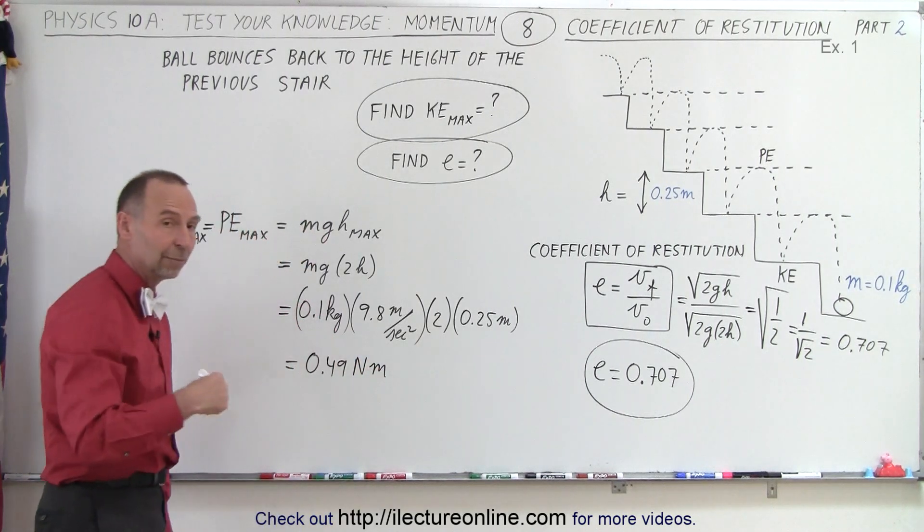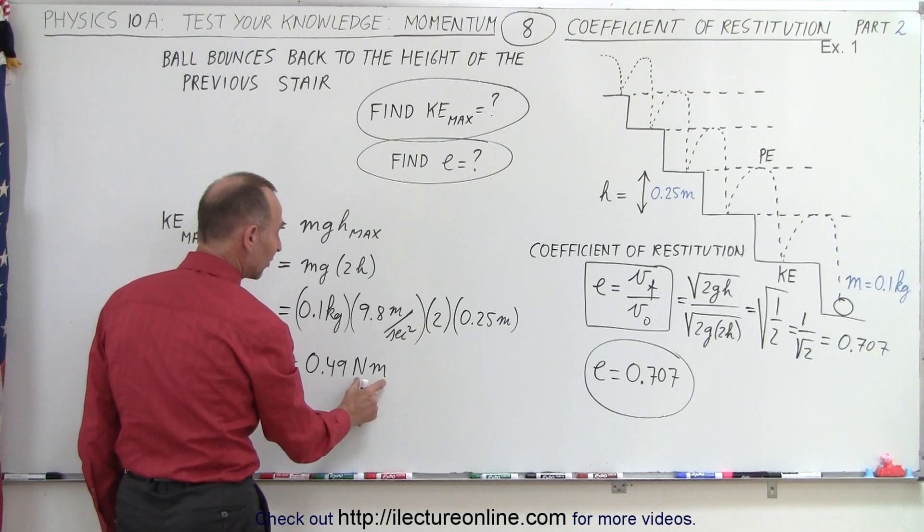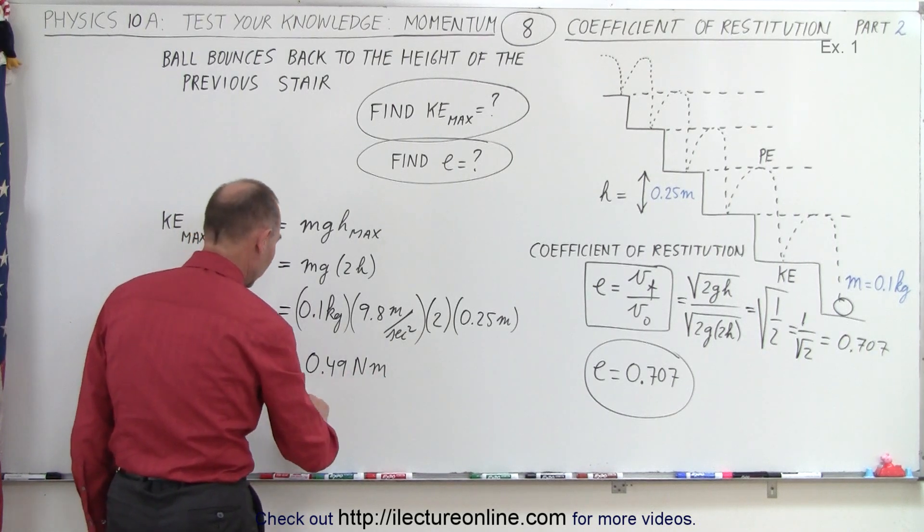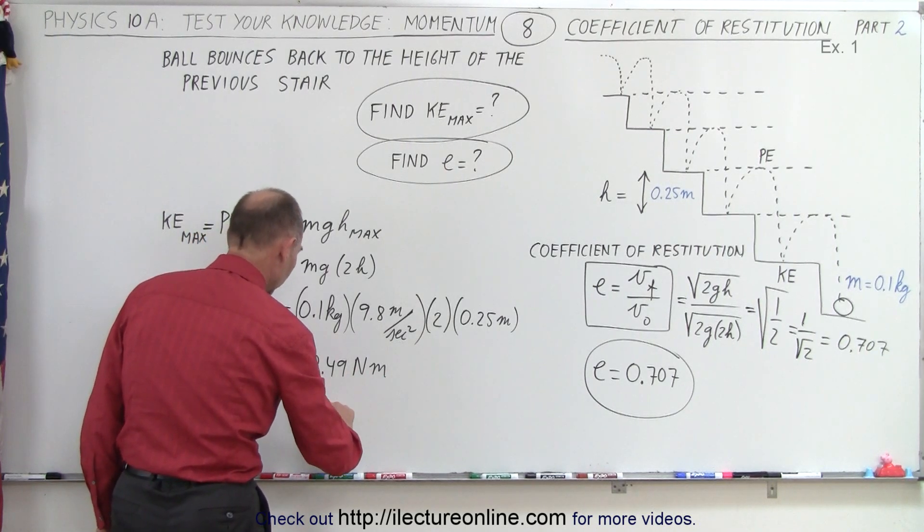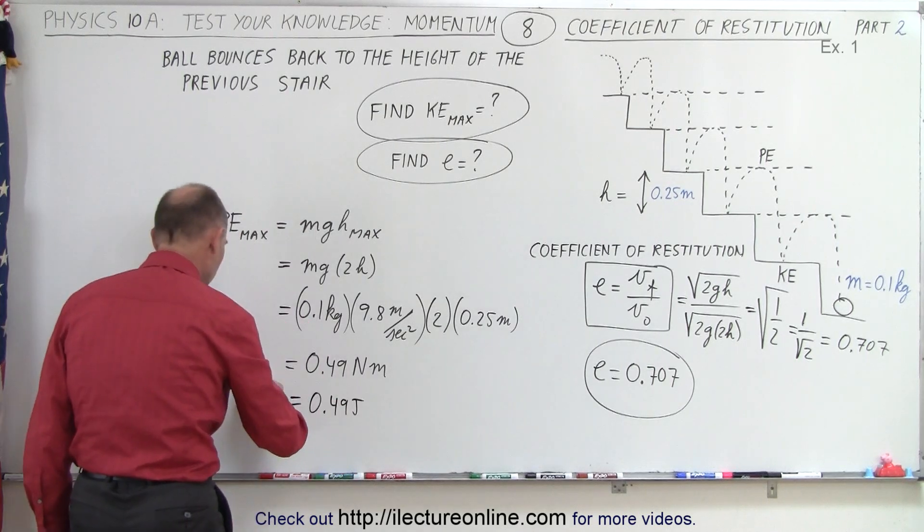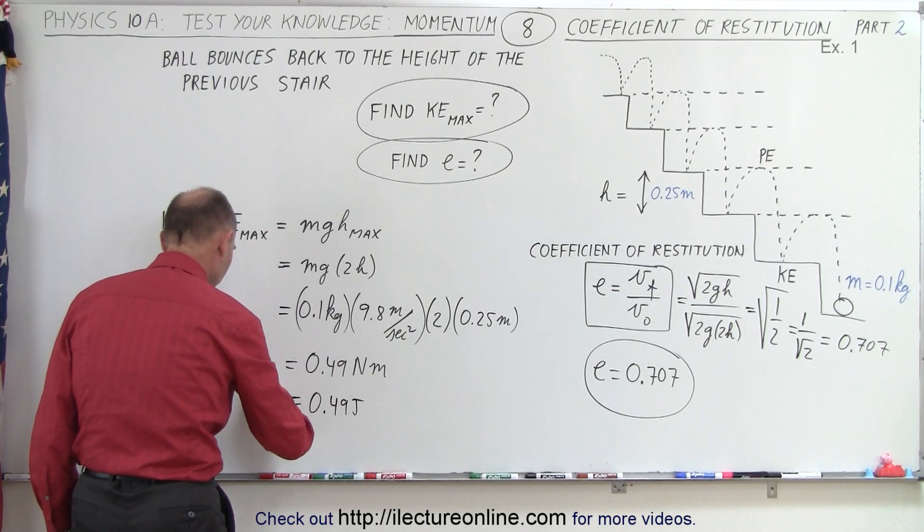And, of course, in British units, that's pounds times feet. But in this case, newton meters can be converted to joules, so it's 0.49 joules for the kinetic energy max.